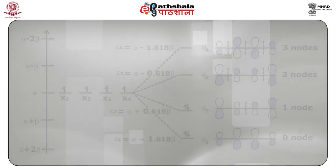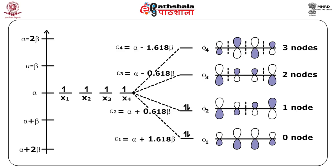Without even doing an HMO calculation, you know the number of nodes is n−1 according to the particle-in-a-box model. There are 0 nodes for n=1, 1 node for n=2, 2 nodes for n=3, and 3 nodes for n=4. The HMO energies are α+1.618β, α+0.618β, α−0.618β, and α−1.618β. The two opposite carbons χ1 and χ4 have the same sign if the number of nodes is even, opposite signs if odd. Thus ψ1 and ψ3 transform as AU and ψ2 and ψ4 transform as BG.